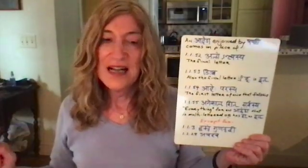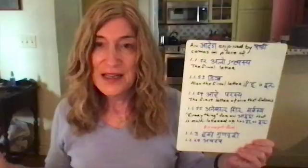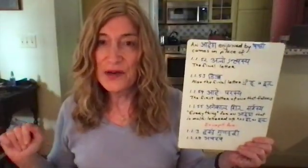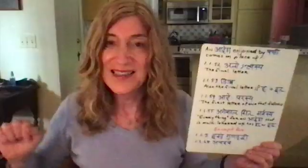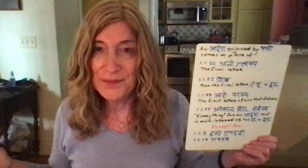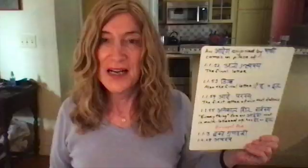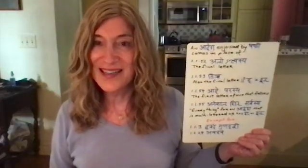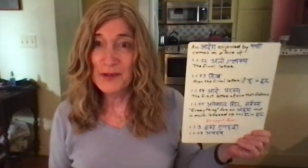An adesha enjoined by shashti comes in place of — and this is the kind of general default concept — alontisya, the final letter of a sound sequence. Then 1153, nyitcha — that means nyit, one that has ng for it. So also one that has ng for it comes alontisya, in place of the final one only. That sounds a little redundant, but we can have faith that Panini didn't fall asleep on the job and pop in a whole sutra that is completely unnecessary — and we'll see why.